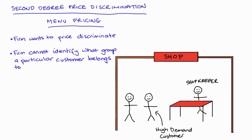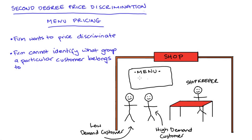For the sake of illustration, let's say this customer here has a high demand for the product — they would like to buy a lot — and this other customer here has a low demand for the product, so they're not so keen. What the firm can do in this situation is offer a menu of options to customers, with different options designed for each customer type.